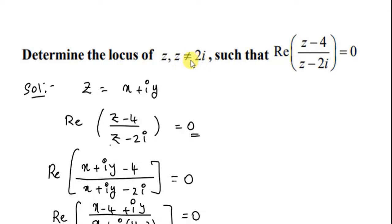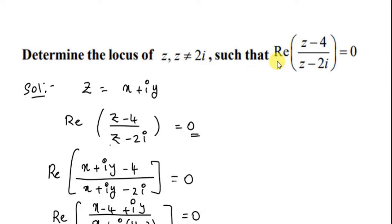The present question: Determine the locus of Z, where Z is not equal to 2i, such that the real part of (Z minus 4) divided by (Z minus 2i) is equal to 0. Note: Z is not equal to 2i because having Z equal to 2i in the denominator makes it undefined.